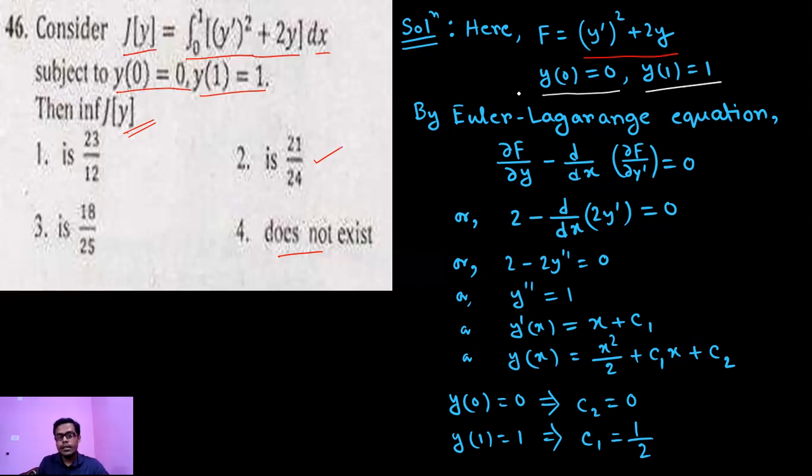Then by Euler-Lagrange equation, this is our Euler-Lagrange equation: ∂F/∂y minus d/dx(∂F/∂y') equals to 0. So ∂F/∂y equals to 2 minus d/dx(∂F/∂y') equals to 2y' equals to 0.